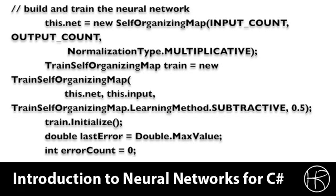Next, we set up to actually train the neural network. We are passing in the input count, the output count, and we are going to use multiplicative normalization for this neural network. We create a training object, and we are going to use the subtractive method, and we are going to also use a learning rate of 50%, or 0.5.